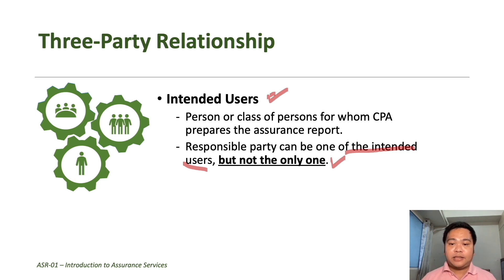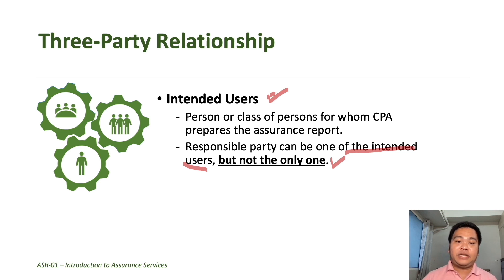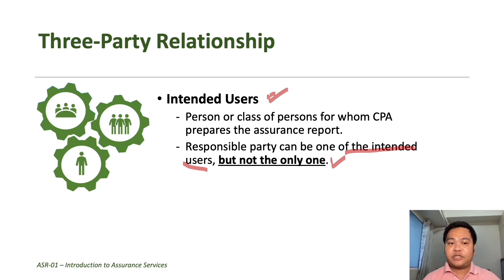If practicable, the intended users — together with the practitioner, the responsible party, and the engaging party (if different) — should be involved in determining the requirements of the engagement. However, the practitioner is the only one responsible for determining the nature, timing, and extent of procedures to be performed. When determining the requirements of the engagement, all parties involved must participate, including the responsible party, the practitioner, the users if practicable, and the engaging party if different. But the nature of the procedures to be performed remains the sole responsibility of the practitioner.